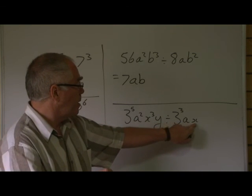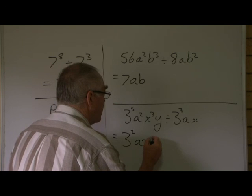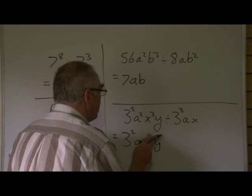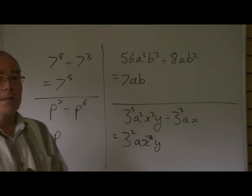x cubed divided by x to the power of 1 is going to give me 3 take 1 is 2, so x squared. And there's no y in the denominator, so we're just going to have y. And that's it, done.